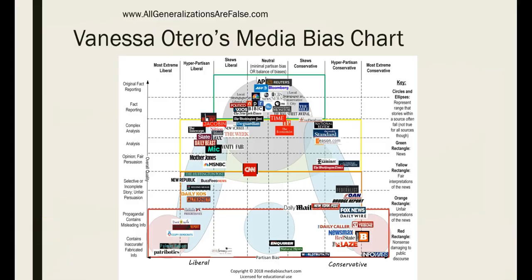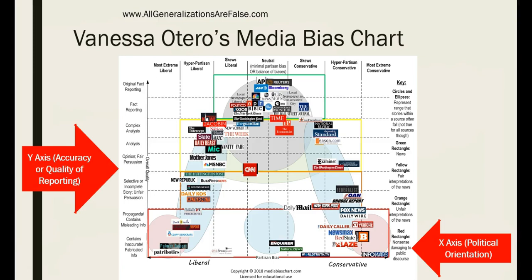Attorney Vanessa Otero hopes to help us slow down the storm by giving us an idea of where common news sources fall in two categories: partisan bias, or political bias, and overall quality, which has to do with how accurate and comprehensive a news source is. Otero explains how she evaluated these news sources at her website, but ultimately she emphasizes that it is her informed opinion based on her classifications. She encourages chart users to explore if and how they agree with her chart. We're going to talk about political orientation on the x-axis and the accuracy of reporting on the y-axis separately, and then see how Otero classifies sources in zones of use.